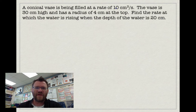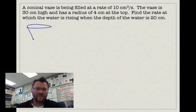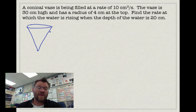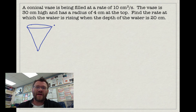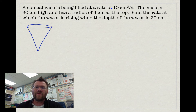A conical vase is being filled at a rate of 10 centimetres cubed per second. The vase is 30 centimetres high and has a radius of 4 centimetres at the top. Find the rate at which the water is rising when the depth of the water is 20 centimetres. This is where calculus is handy — when the water level is low, the cone is narrow so height rises quickly; near the top it rises much more slowly. We need the volume of a cone: V equals one-third π r squared h. The given rate is dv over dt, and we need to find dh over dt.